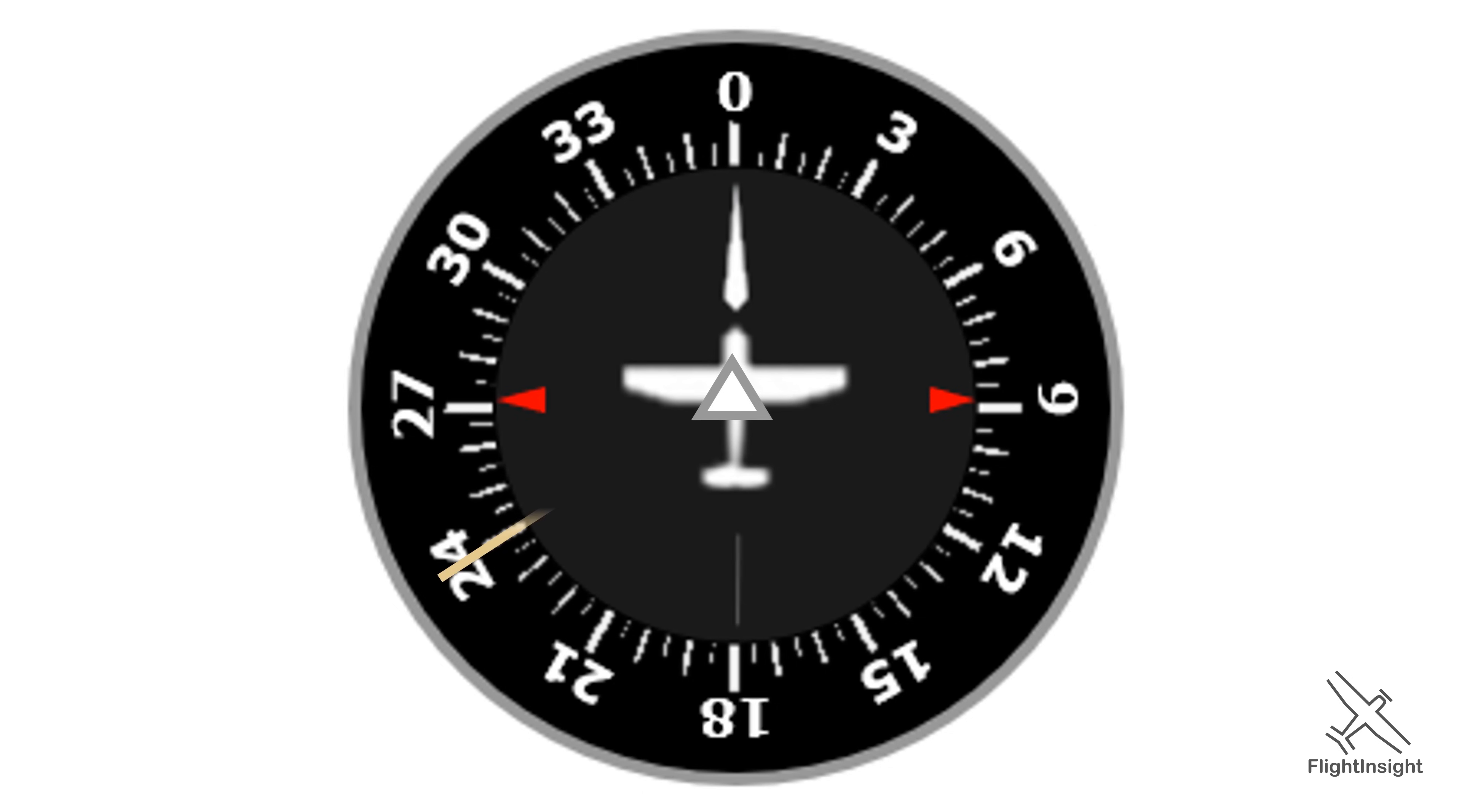Next, we want to draw a line into the fix along the outbound course of the hold or the radial we're told to fly. This also makes sense since this is the same line which connects to the holding fix. So here we have an outbound course of 240 degrees, so there's a line along 240 into the station.